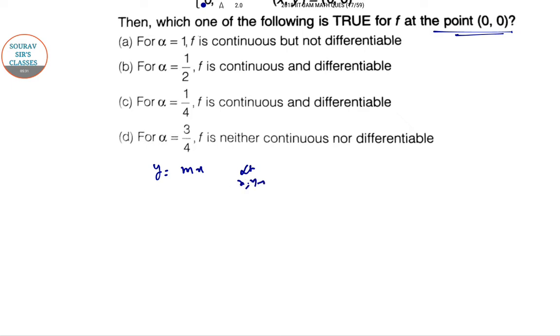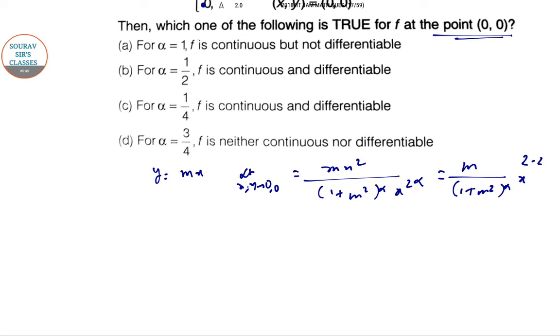Here you can see we have a function where x²+y² to the power α. Let me put y = mx. So limit (x,y) → (0,0) gives mx²/(1+m²)^α / x^(2α) = m(1+m²)^α · x^(2-2α). For continuity, 2-2α must be greater than 0, so α < 1.